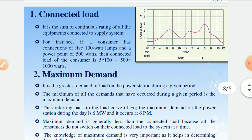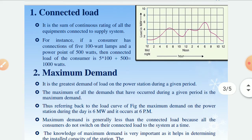The first term is connected load. It is the sum of continuous ratings of all the equipments which are connected to the supply system. For easy understanding, I will explain it using our home. If you have different equipments at home and you add all the ratings of those equipments connected, then the total value is known as the connected load. For instance, if a consumer has five 100-watt lamps and one power point with 500 watts, then the connected load is 5×100 + 500 = 1000 watts.